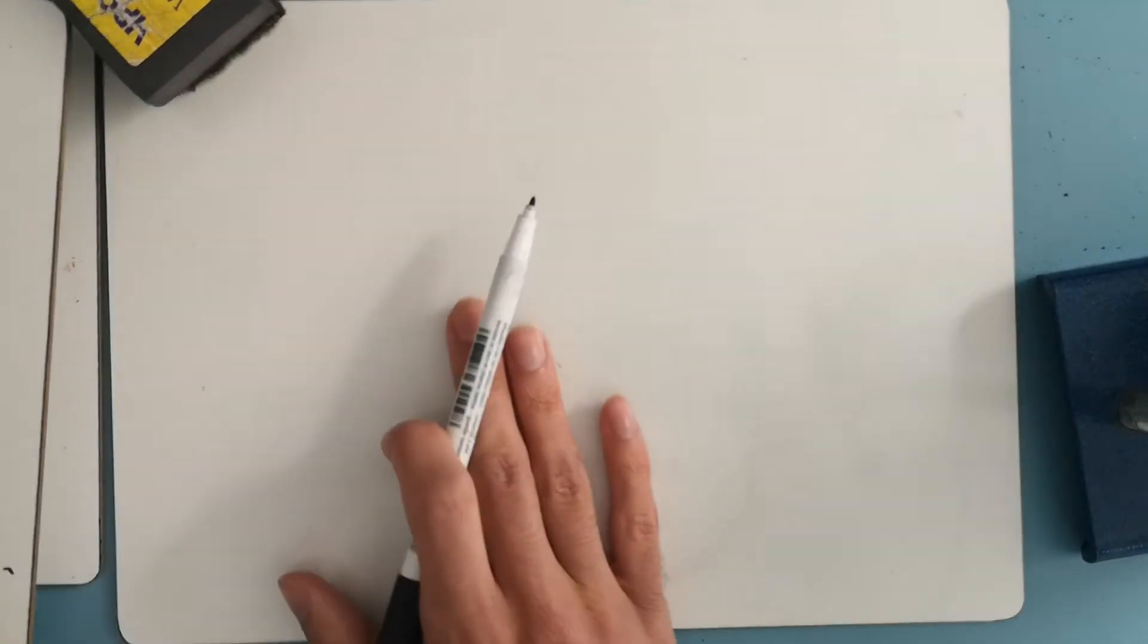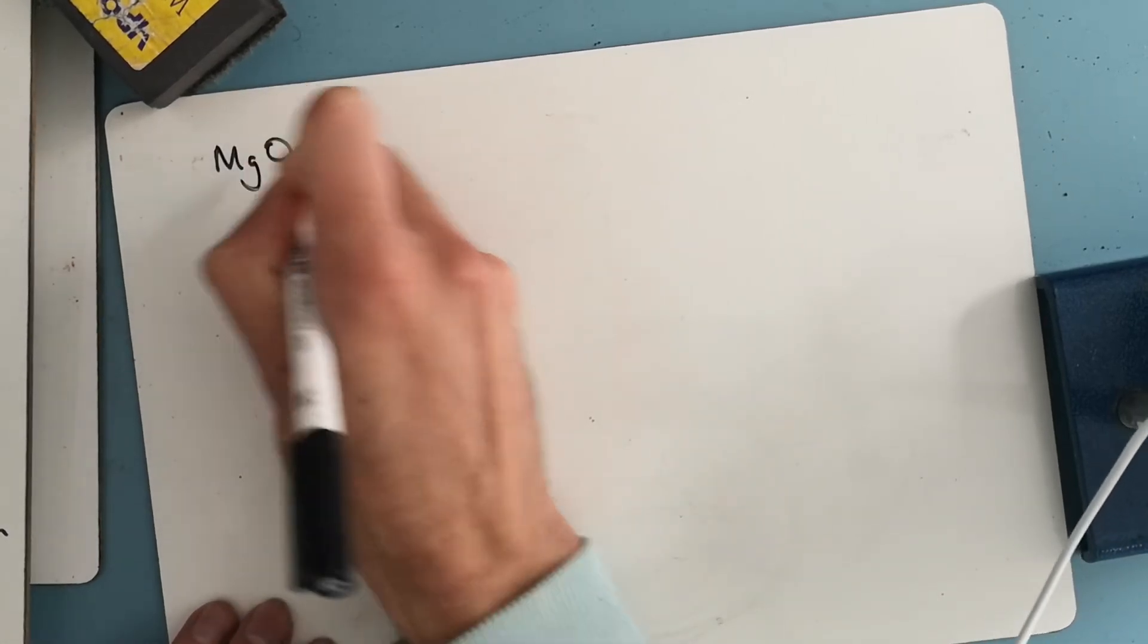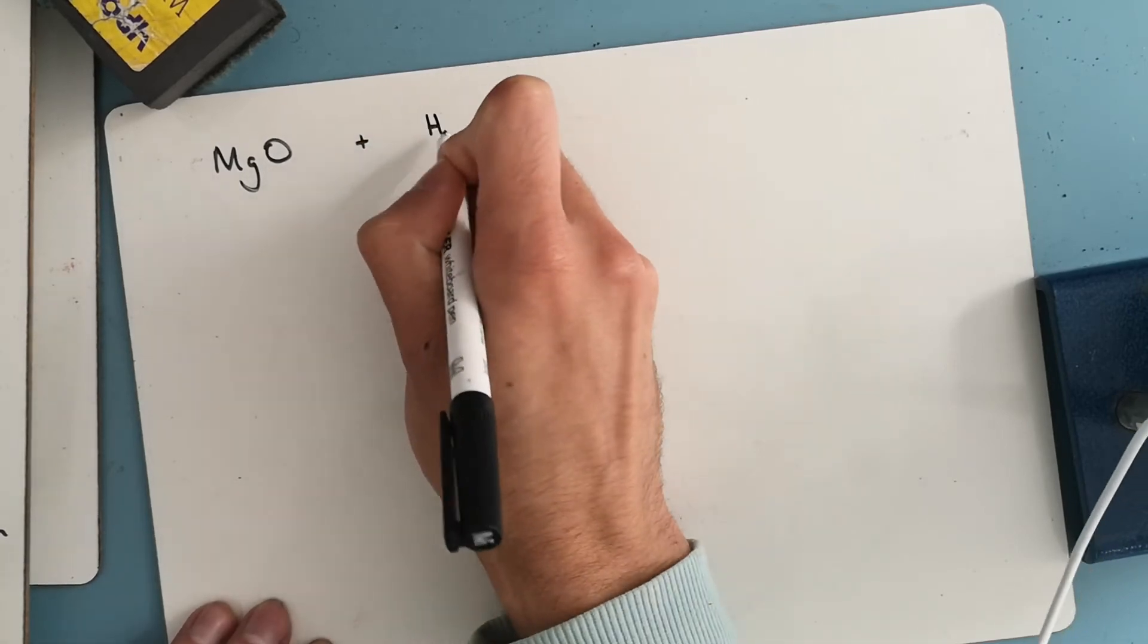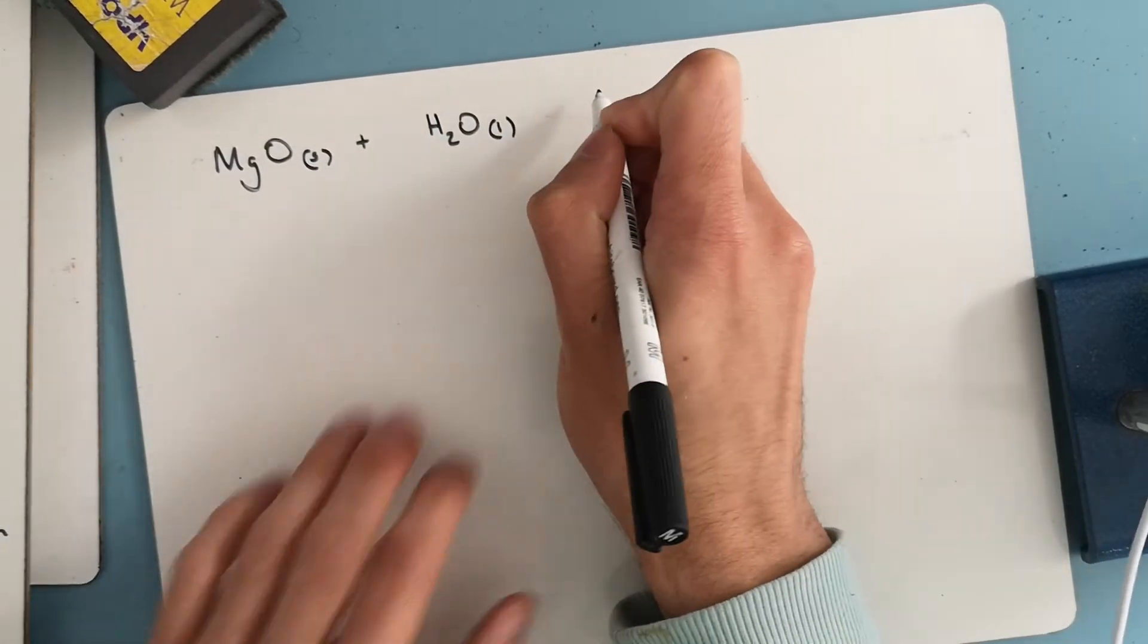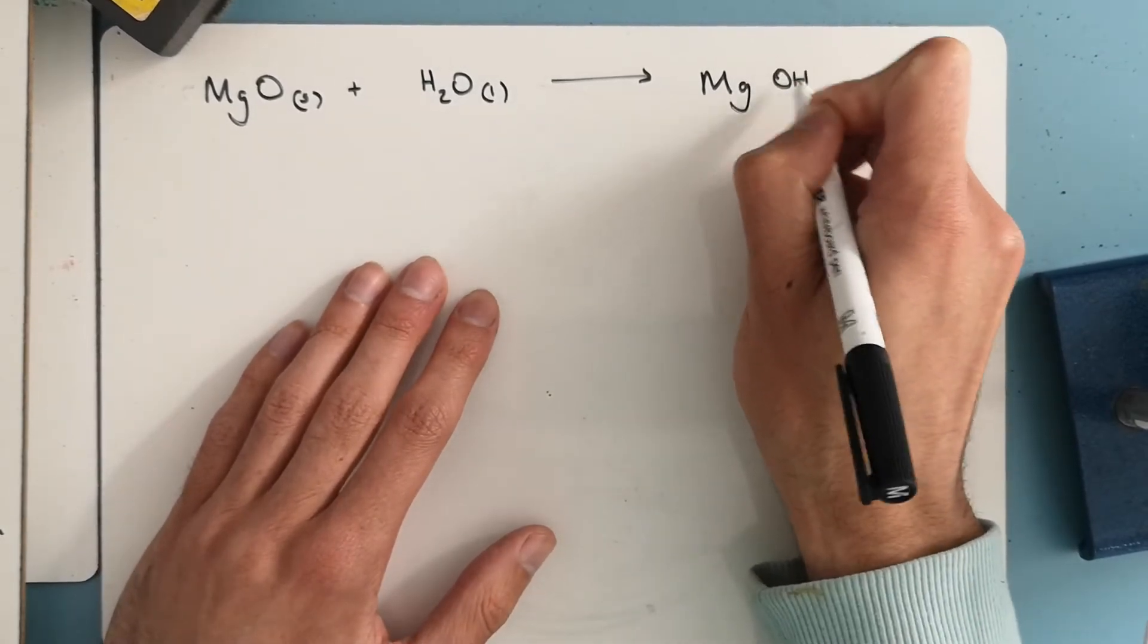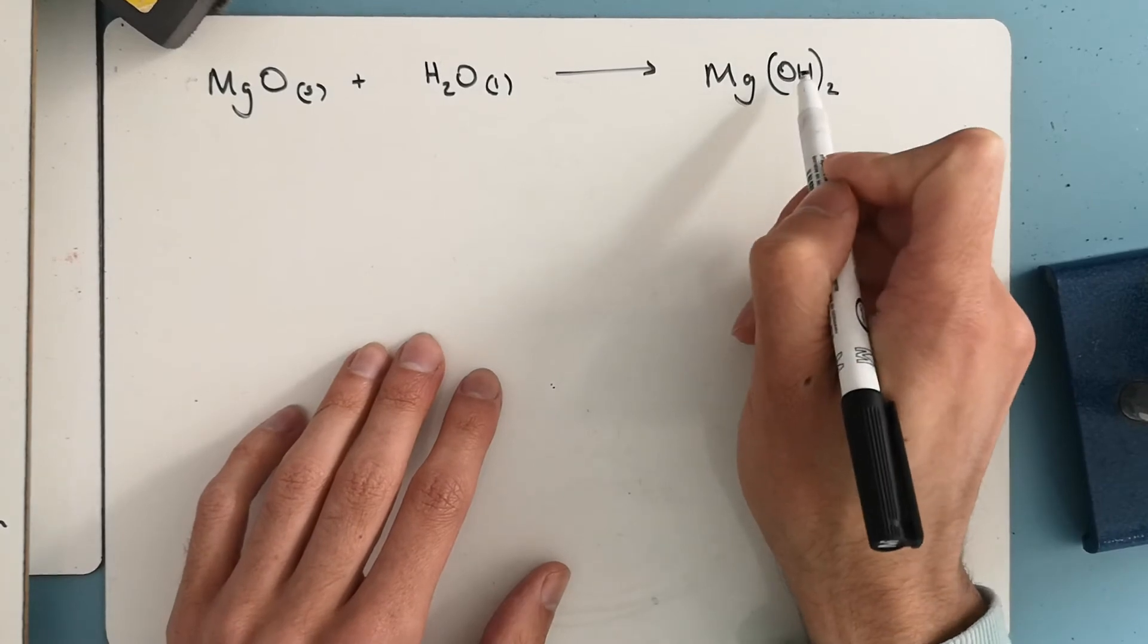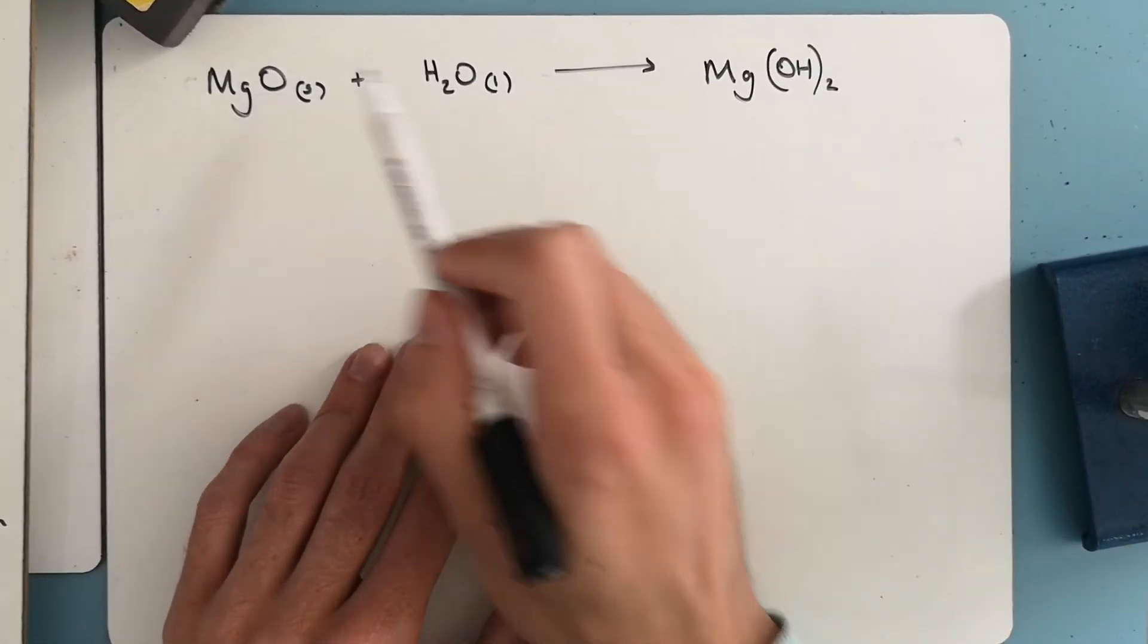Next up, I'm just going to go through what happens when the oxide reacts with water. So here we've got solid magnesium oxide, water is in this case a liquid, and that is going to go to magnesium hydroxide. Remember, 2+ ion formed, hydroxide is a single negative ion, so there's two hydroxides.